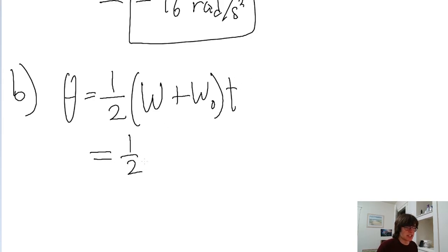So in this case, that is one half of 1200 revolutions per minute plus 3500 revolutions per minute, all multiplied by the time interval of 2.5 seconds or converting into minutes...